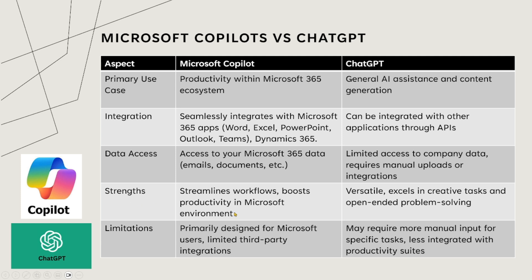What are the strengths? Co-Pilot streamlines workflows and boosts productivity in the Microsoft environment. If you are trying to use Co-Pilot on Apple Mac OS, it may not be as efficient because it is tightly integrated with the Microsoft ecosystem. ChatGPT is versatile and excels in creative tasks and open-ended problems, but you need to write custom APIs to use it in the office suite or on Mac OS or Linux. Limitations: Co-Pilot is primarily designed for Microsoft users and ChatGPT may require more manual input.